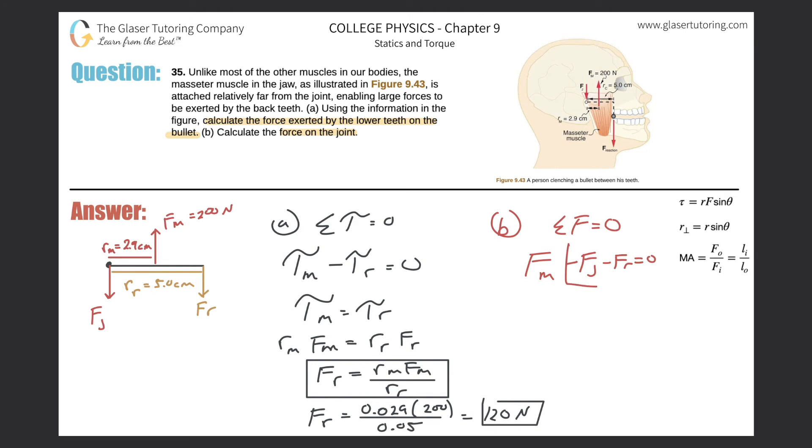Solving for F_j, we get an equation: F_j equals F_m minus F_r. Plugging in the values, F_j equals the force of the masseter muscle, which was 200 newtons, minus the reaction force—we had to round to 120 because of sig figs, but the real number was 116. Taking that into account, the force of the jaw joint is 84 newtons.